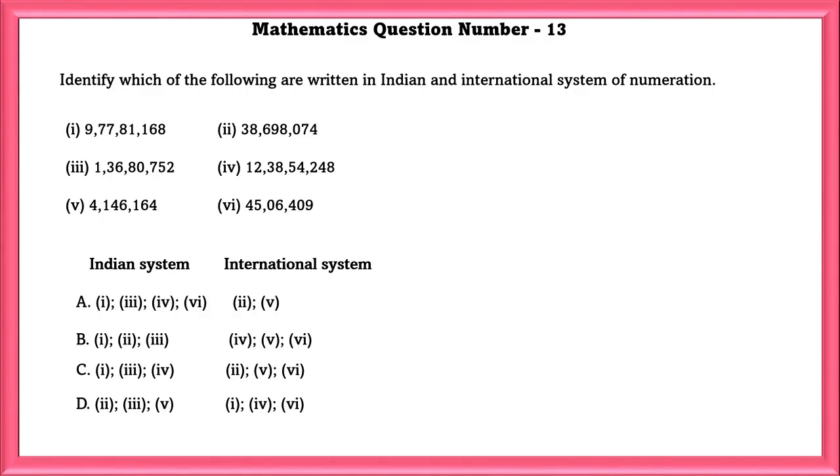Mathematics Question Number 13: Identify which of the following are written in Indian and international system of numeration. The first one is written in Indian system. The second one is in international. The third one is in Indian system. The fourth one is also in Indian system. The fifth one is international. And the sixth one is Indian. So, the answer is A.